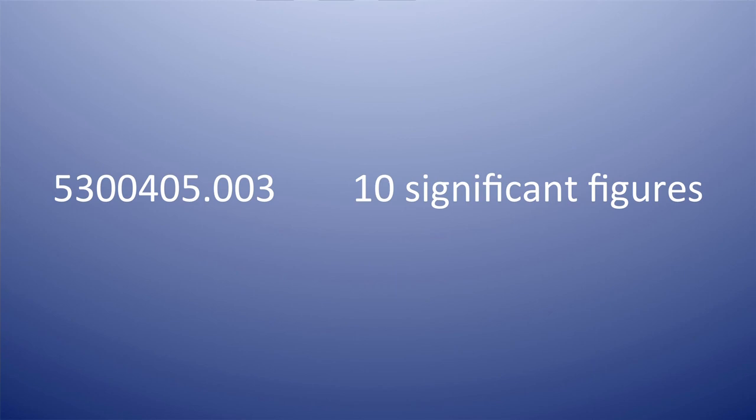Rule two: all zeros between two non-zero digits are significant. For example, 5300405.003 — here you can see the zeros are between two non-zero digits, hence all the zeros are significant. Hence this number has 10 significant figures.